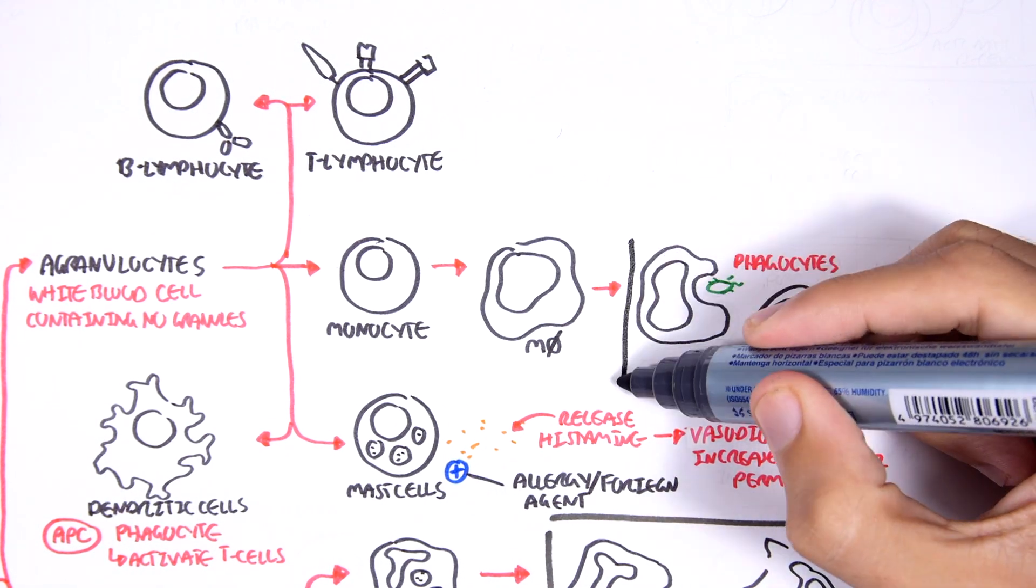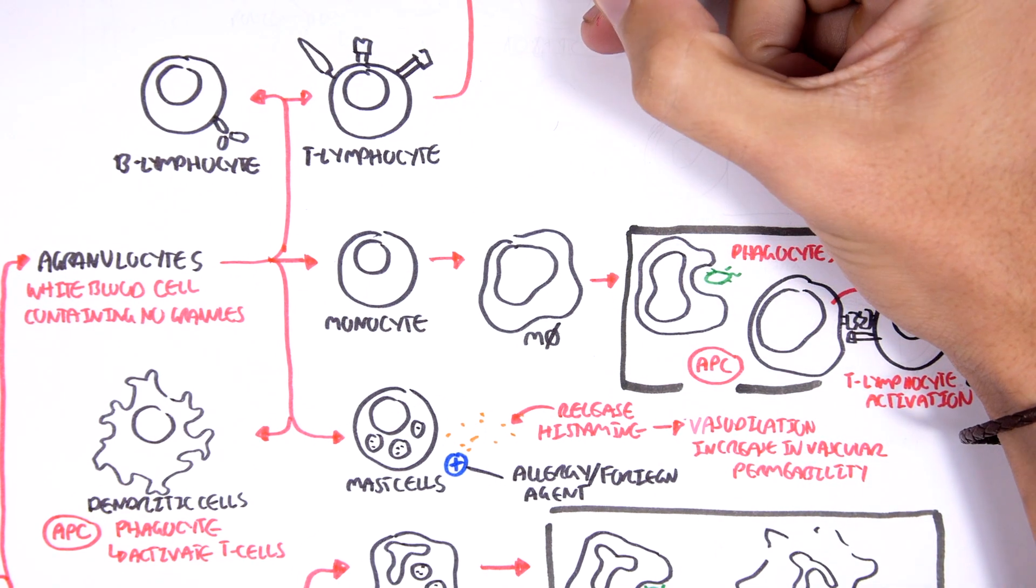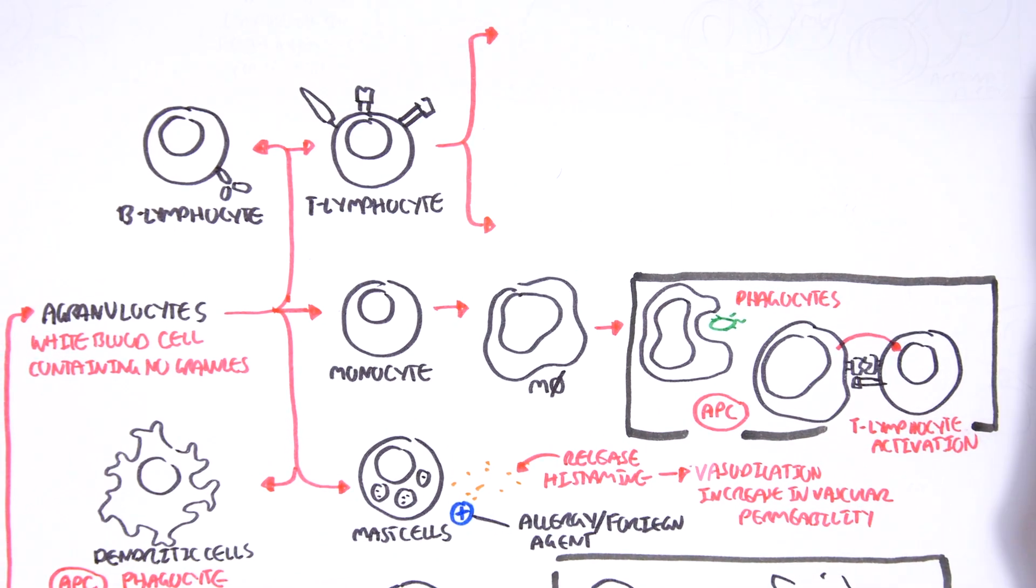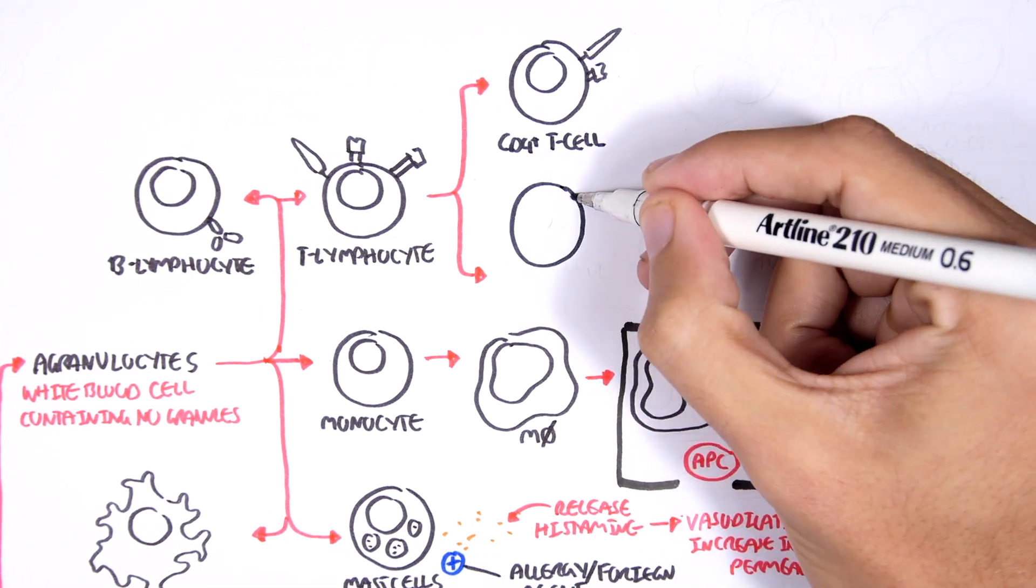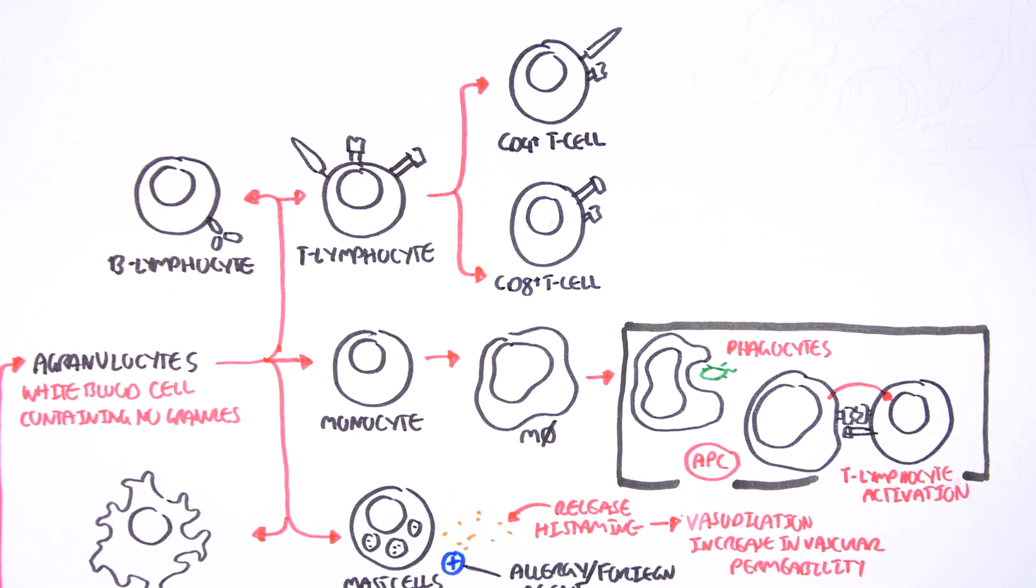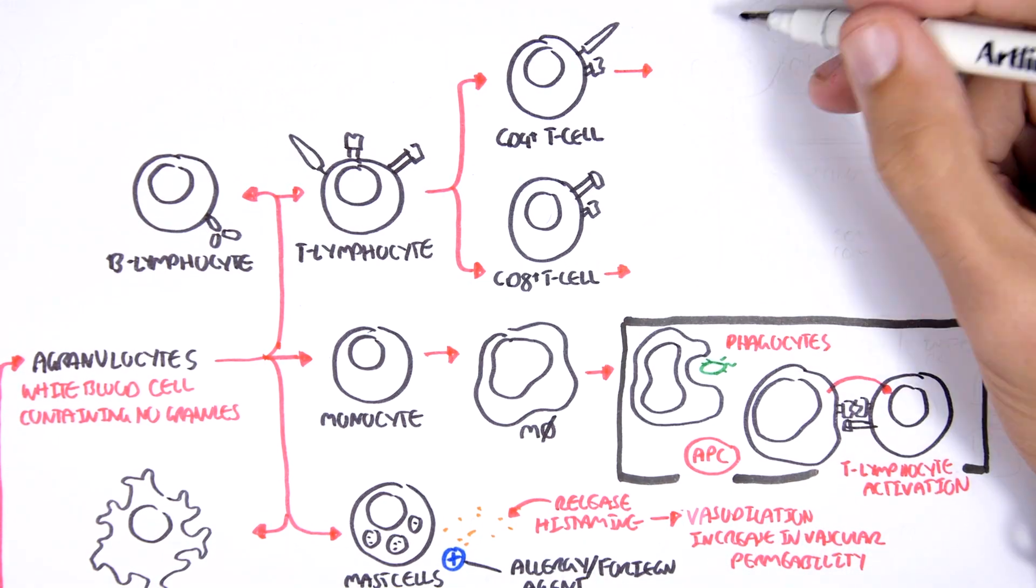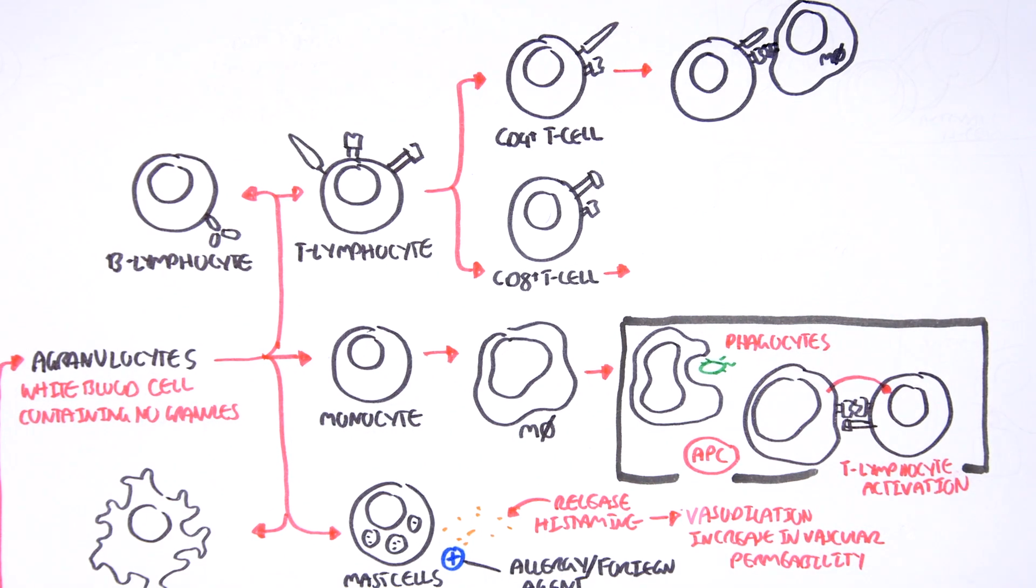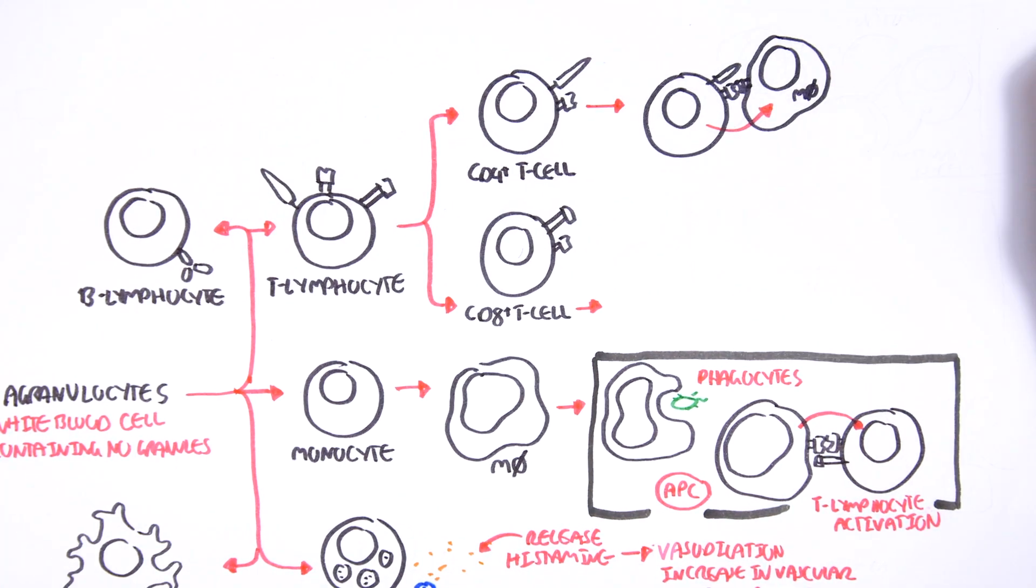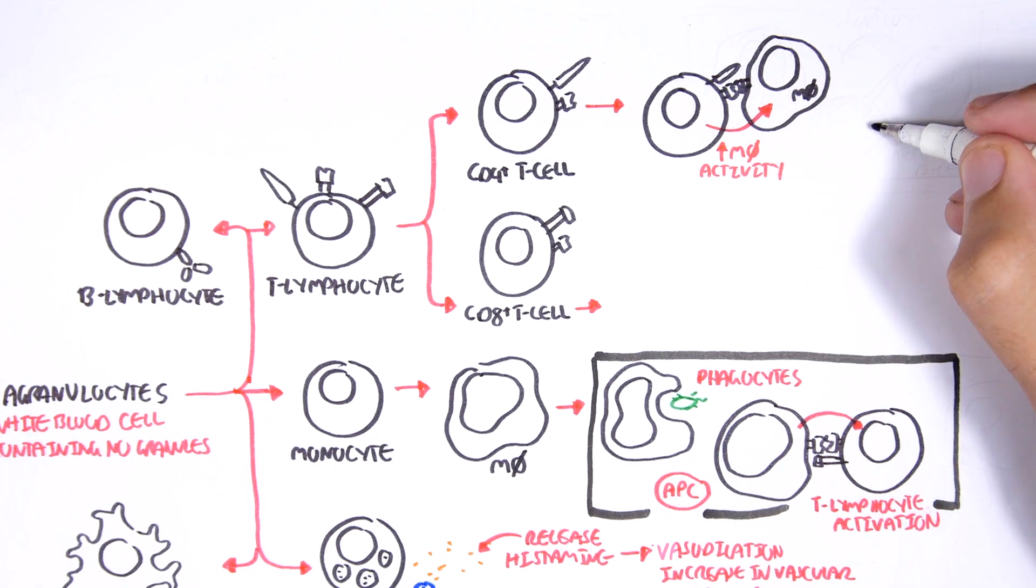So what are the T lymphocytes? T lymphocytes, or known as the T cells, can be divided into two main types of T cells. These are the CD4 T cell and the CD8 T cell. CD4 T cells are known as T helper cells. And they essentially promote the macrophage activity, as well as they will activate the B cells, or the B lymphocytes.